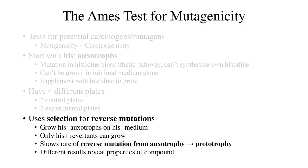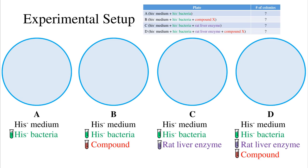Different results reveal properties of the compound. Plate A is a control plate with hist-minus bacteria, the auxotrophs, on hist-minus medium. This plate shows the spontaneous rate of reverse mutation. There is a normal spontaneous mutation rate — one mutation in every 100 million base pairs — as well as slipped mispairing, trinucleotide repeat expansion, or contraction.